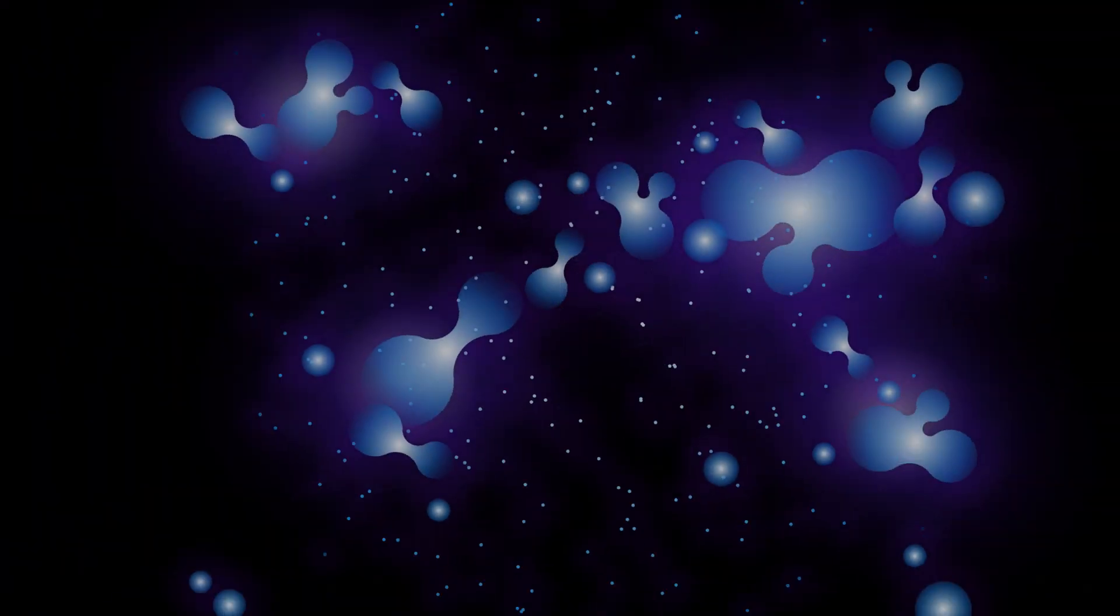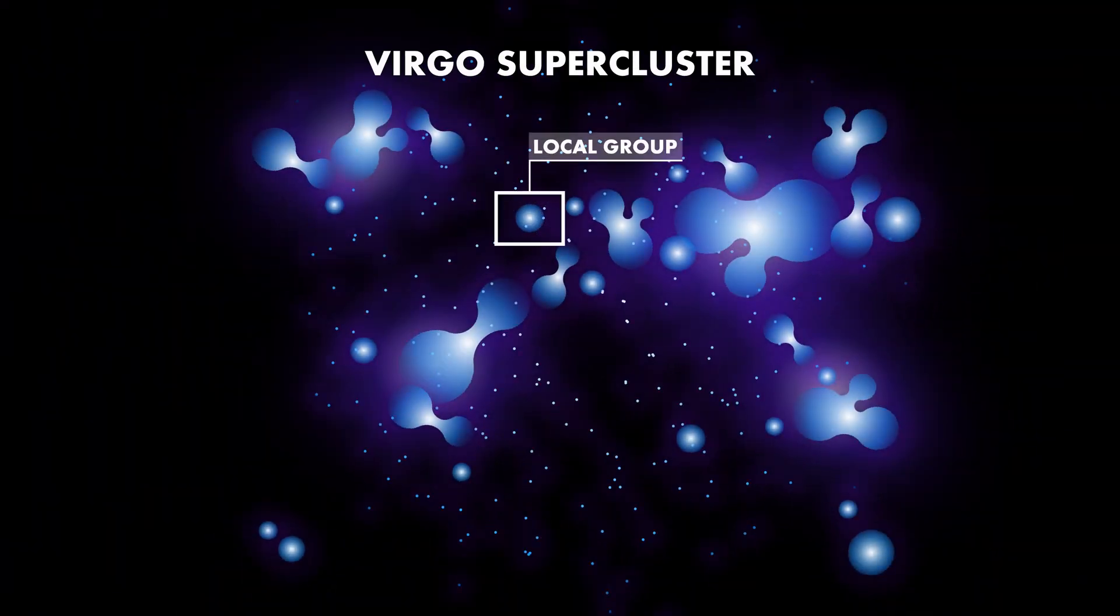When we zoom out a bit more, we see the Virgo supercluster. With the size of 110 million light years, this supercluster contains more than 100 other galaxy groups. The Virgo supercluster is only a small part of an even larger Laniakea supercluster.